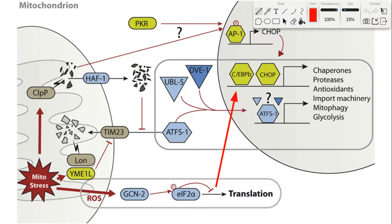Depolarization is the hallmark of a dysfunctional mitochondrion, and it can be caused by many different things like reactive oxygen species, or ROS, which can inhibit the electron transport chain. You can have protein misfolding, mitochondrial DNA mutations, toxic protein accumulation, and really many other things. The point is that mitochondrial dysfunction manifests itself primarily as depolarization.